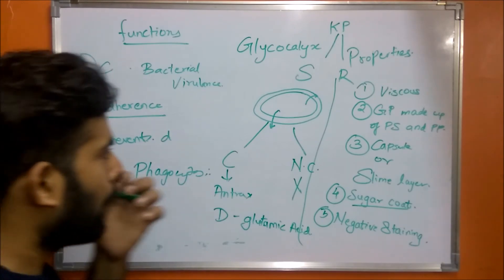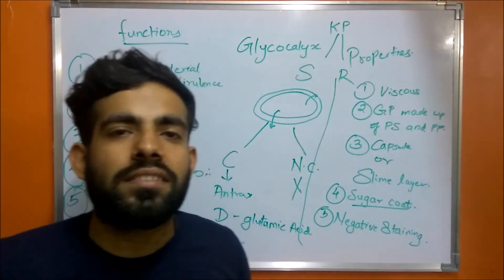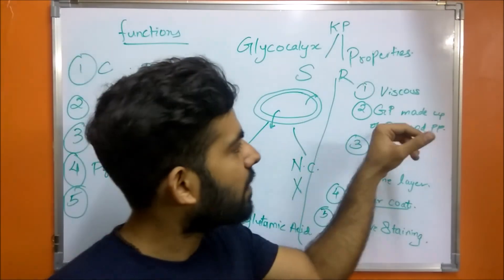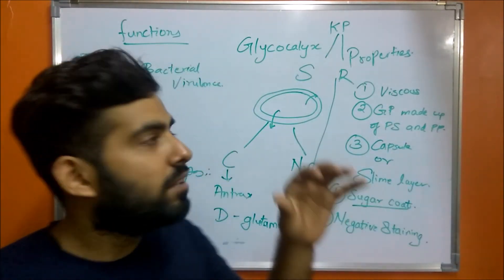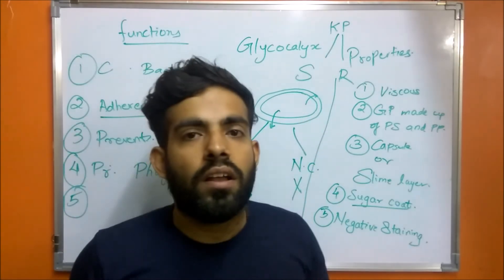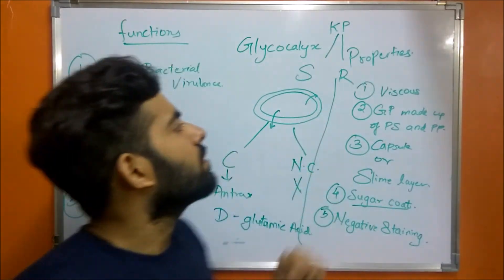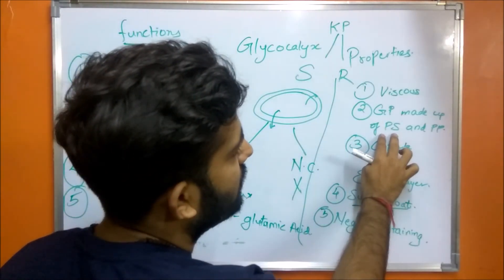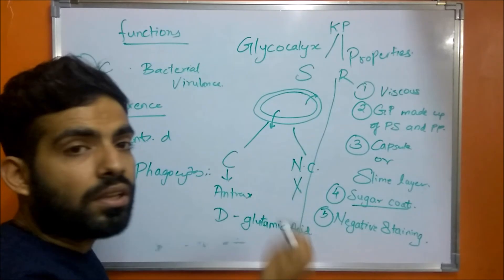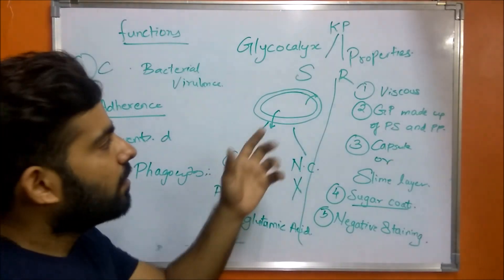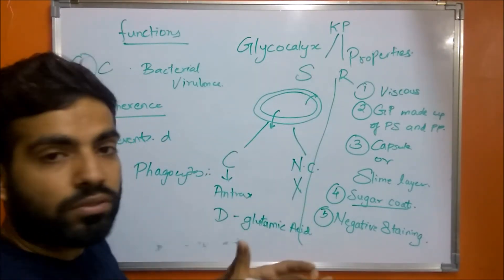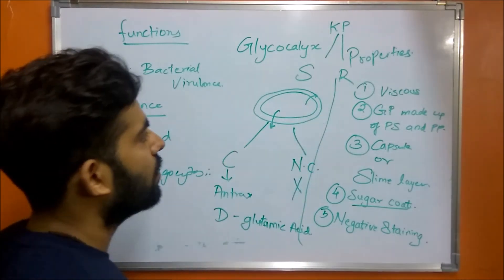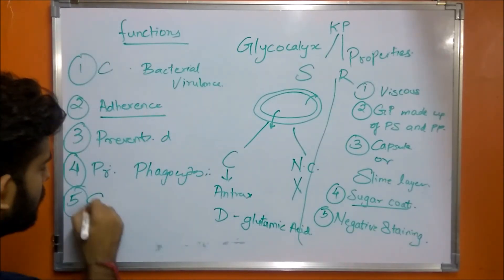The fifth function is that in some cases, the bacterial glycocalyx made up of polysaccharide or polypeptide serves as a source of nutrients in low energy states. The glycocalyx is broken down into simpler products, which the organism can utilize in low energy states in order to survive.